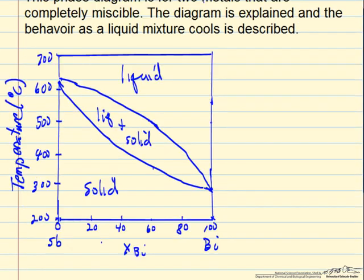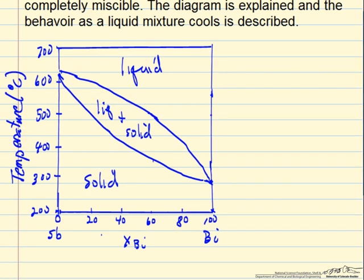We are going to talk about a number of aspects of this diagram. First, this point corresponds to the melting temperature or solidification temperature for bismuth, and then likewise this point is the melting temperature for antimony.